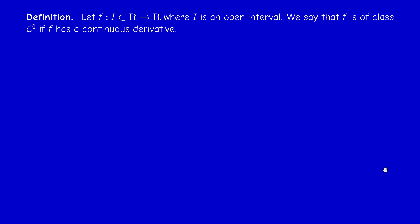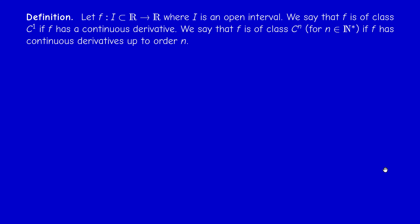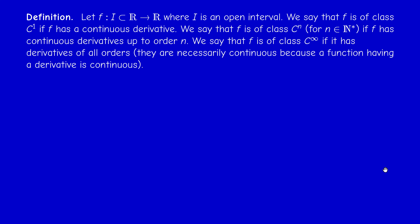What do I mean by a function of class C1? A function f is of class C1 if it has a continuous derivative. More generally, a function f is of class Cn if it has continuous derivatives up to and including order n. And f is of class C-infinity if it has derivatives of all orders, which are necessarily continuous because a differentiable function is continuous.